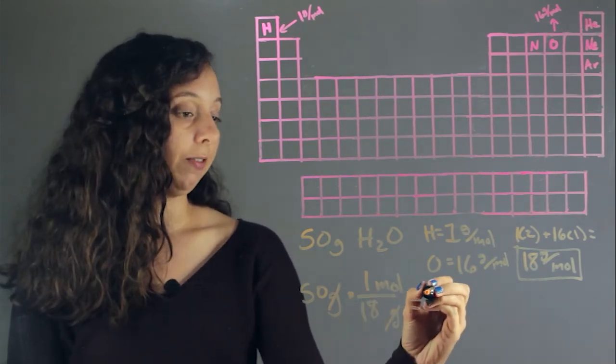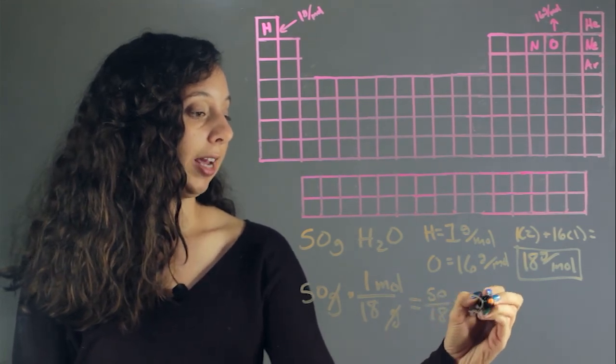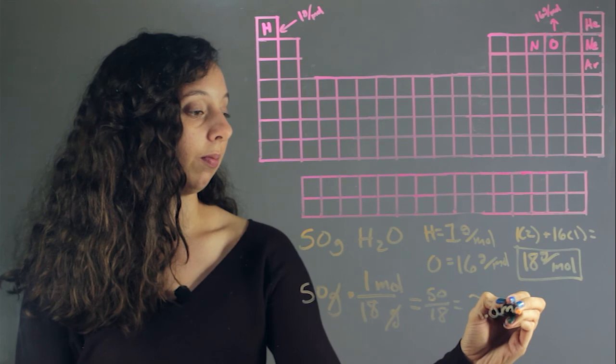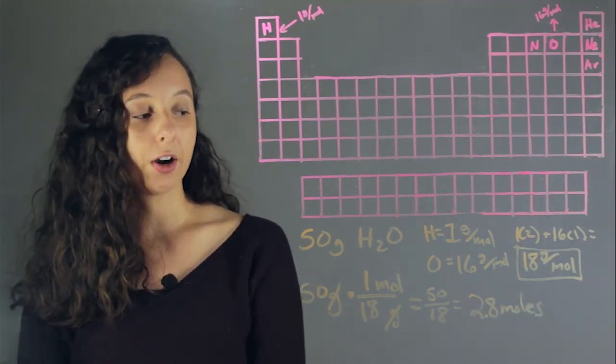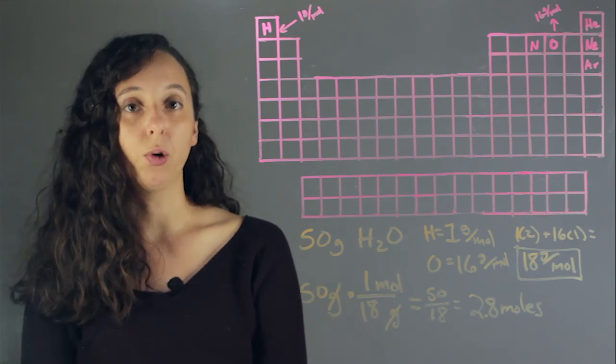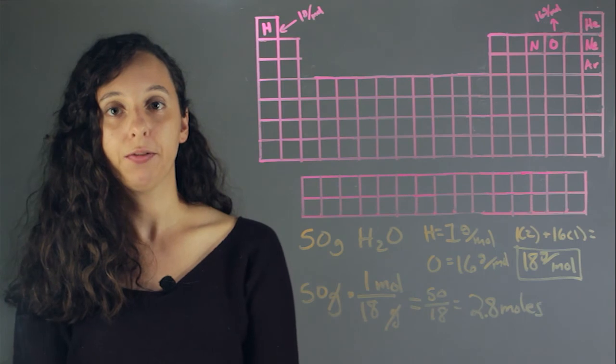Now, if we divide 50 by 18, we're going to get 2.8 moles. So that's how we convert. If we have 50 grams of water, we're going to have 2.8 moles of water. I'm Robin Higgins, and this is how to convert from mass to moles.